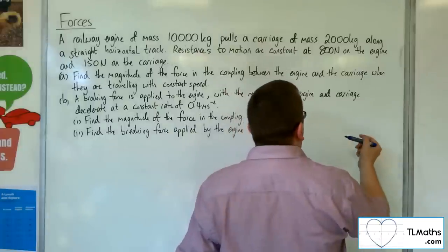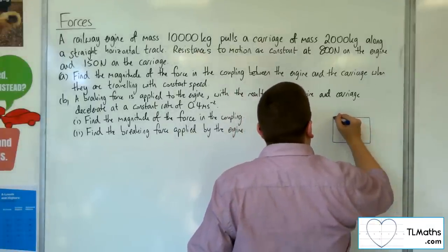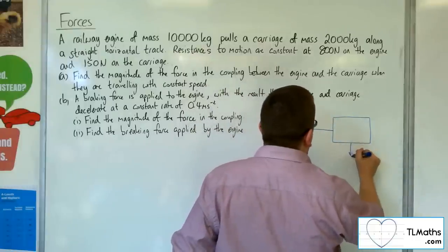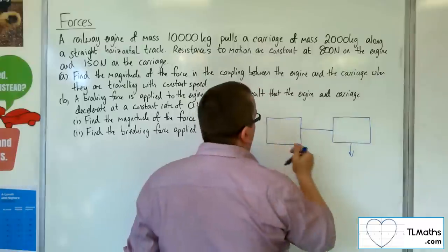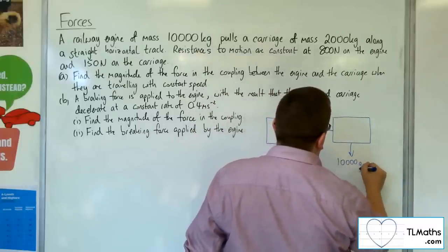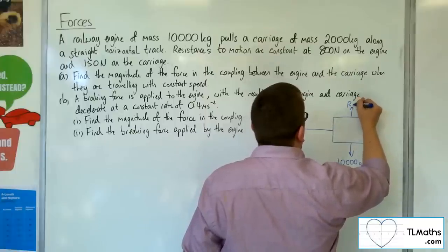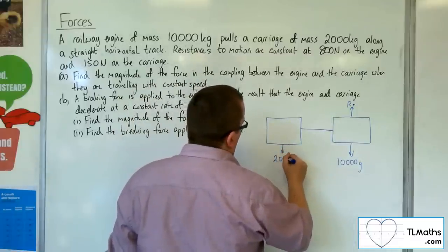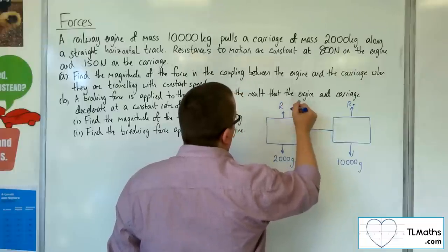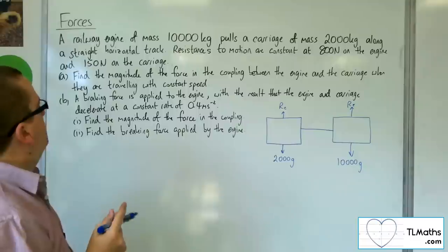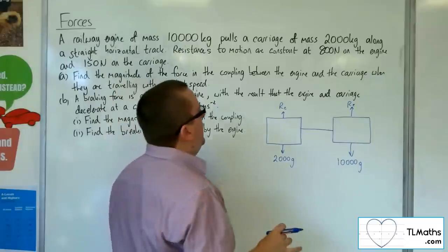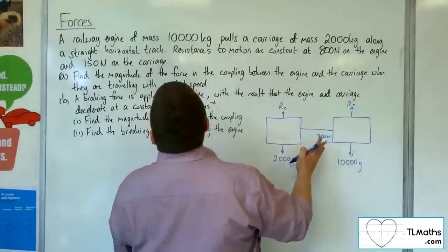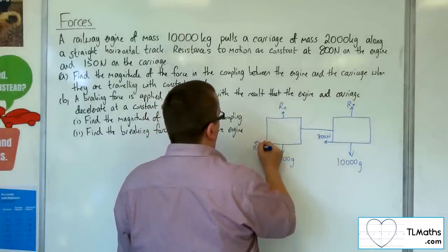Let's draw a diagram so we can see what's going on. Here is the railway engine, here is the coupling, and here is the carriage. The weight of the engine is 10,000g, with a normal reaction force. For the carriage, we have a mass of 2,000 kilos, so a weight of 2,000g, and a normal reaction force. Resistances to motion are 800 newtons for the engine and 150 newtons for the carriage.